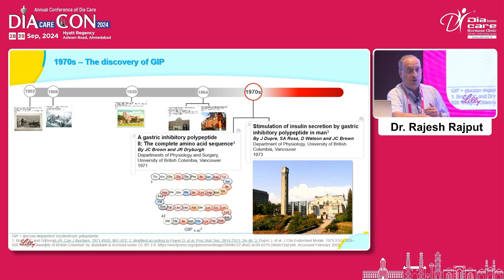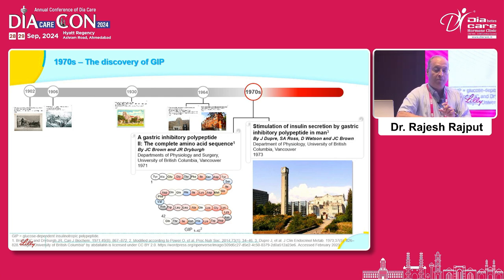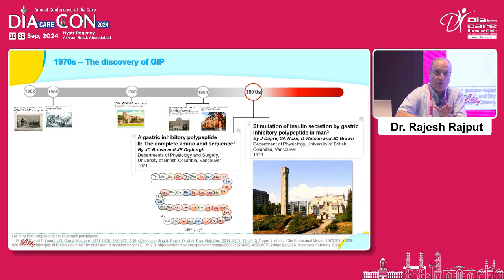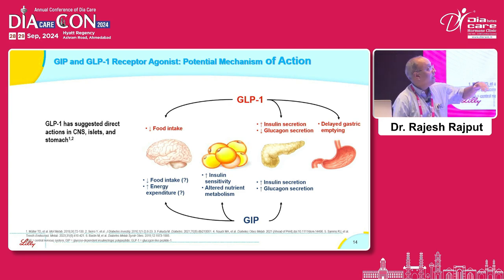Now we have started discussing GIP again. Although it was discovered first in 1970, a drug has been developed on the GIP backbone into which a GLP receptor agonist is inserted, so the molecule has both the actions of GIP as well as GLP-1. If we look at the actions of GIP and compare them with GLP-1, there are some differences and some similarities.